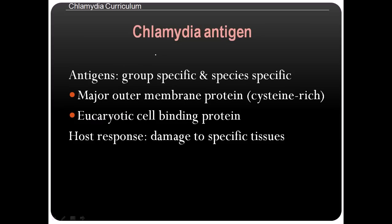Regarding Chlamydia antigens, they can be group-specific or species-specific. Group-specific antigens are detectable across a group of similar bacteria; species-specific antigens are narrower in activity, targeting only a particular species. These antigens are mostly part of the major outer membrane protein, which is cysteine-rich. This antigen aids in adherence to the host cell and in the attachment and internalization process. Eukaryotic cell binding proteins can also act as antigens.